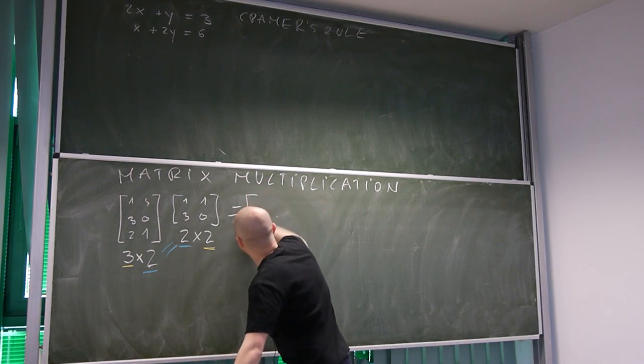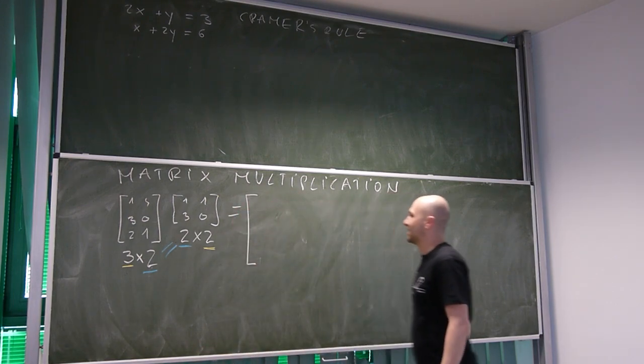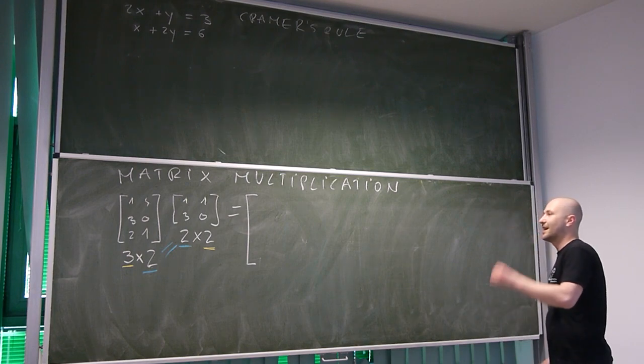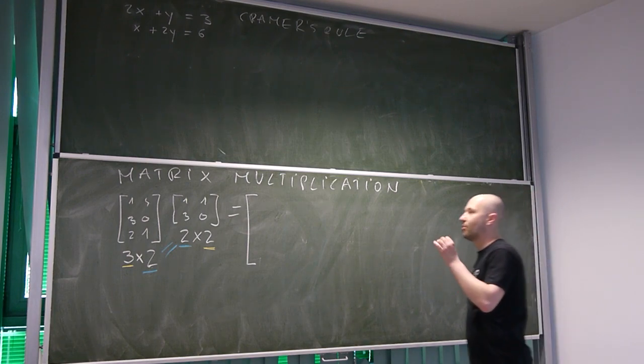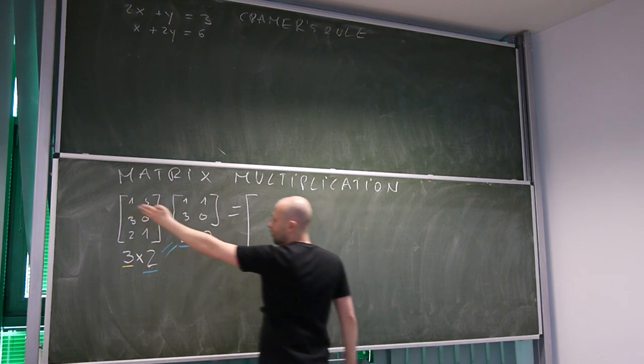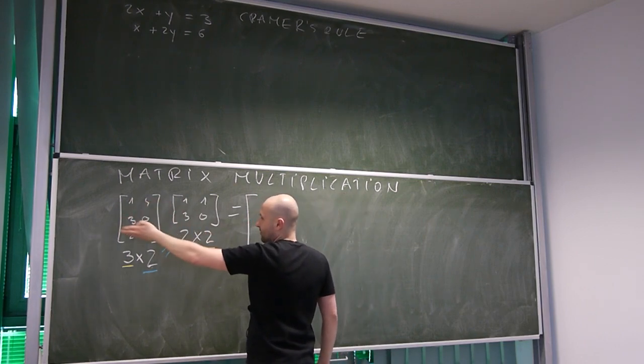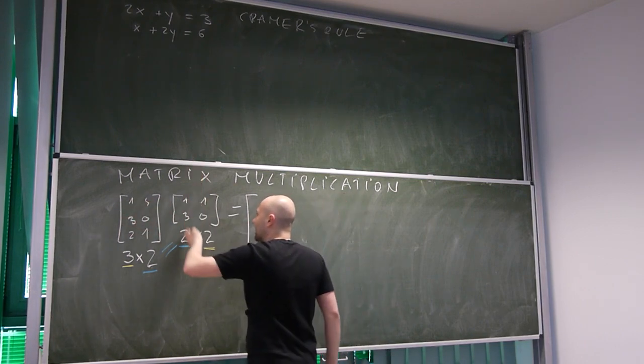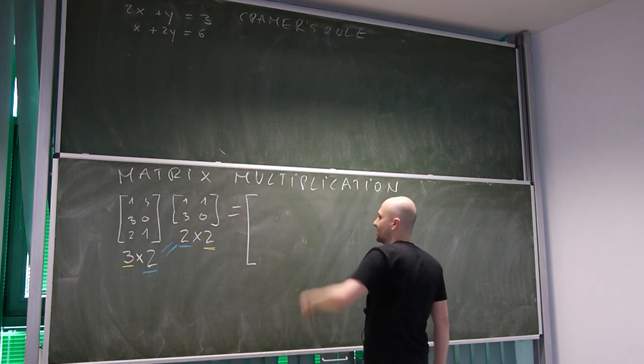The basic idea of multiplying a matrix is to multiply each row by each column. So, each row from the first matrix by each column of the second matrix.